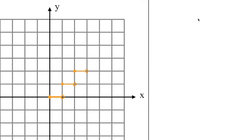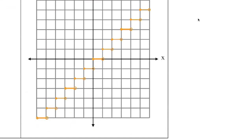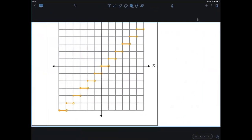We basically repeat the same process over and over again. To save time, let's go ahead and draw this — just like this. This is how we do our step function, just like the one shown on Desmos. Pretty straightforward.